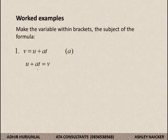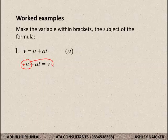Now I look onto the left-hand side. I am manipulating for a, so I do not want all the other variables. I am going to start off with what is furthest away from a. I see I have the u, which is being added — it is a positive u. I do not want this, so I have to remove it. I take the u and jump it over to the other side of the equation. A positive becomes a negative. So the u is no longer here; it has hopped over. I end up with at is equal to v minus u.